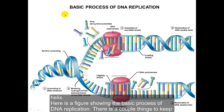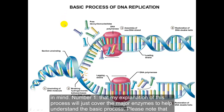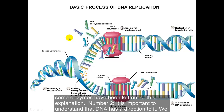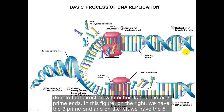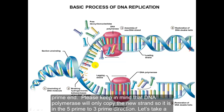Here is a figure showing the basic process of DNA replication. My explanation will cover the major enzymes to help understand the basic process — please note that some enzymes have been left out. It is important to understand that DNA has a direction to it, denoted by its 5' or 3' ends. In this figure, on the right we have the 3' end and on the left we have the 5' end. DNA polymerase will only copy the new strand in the 5' to 3' direction.